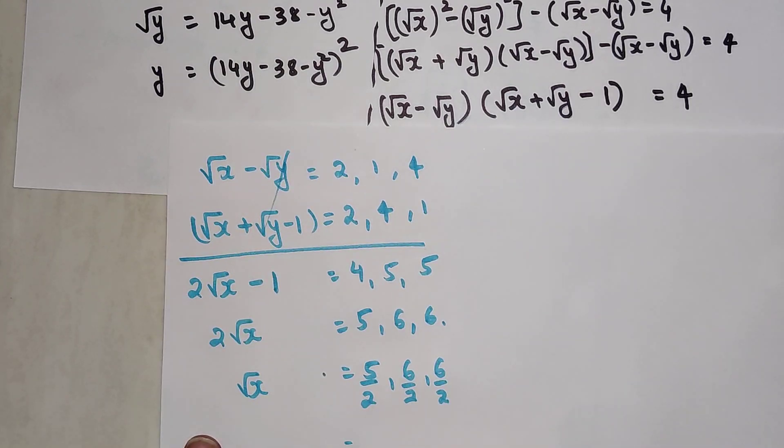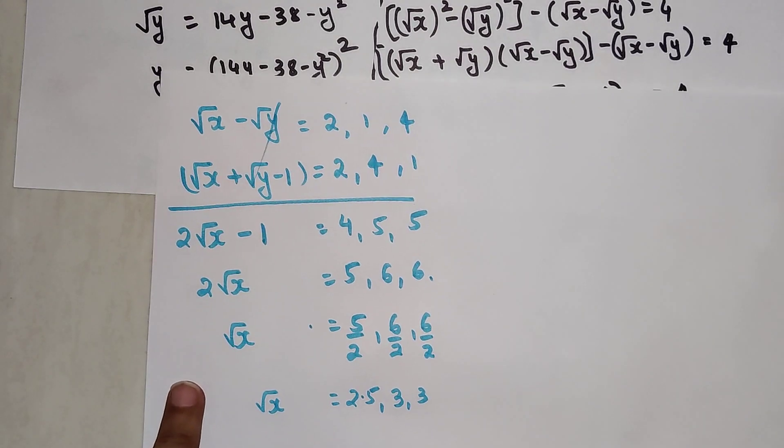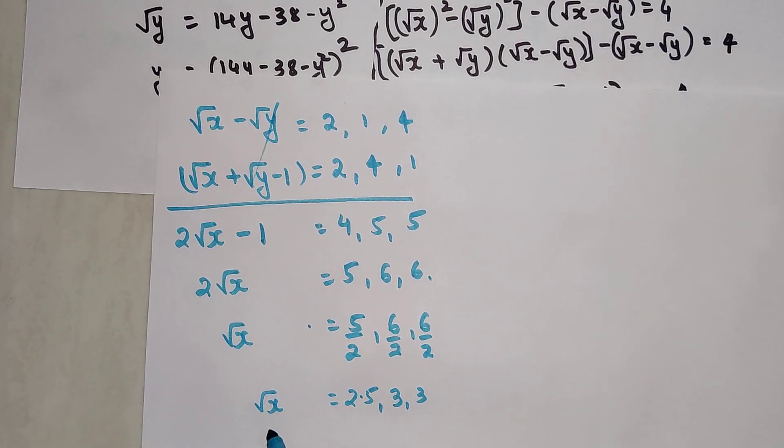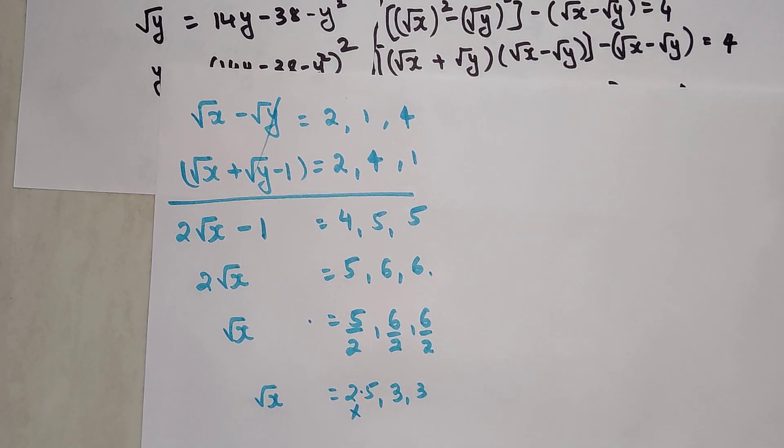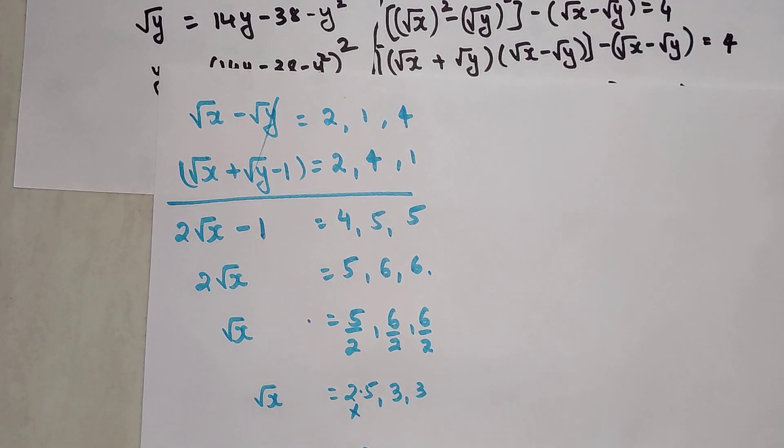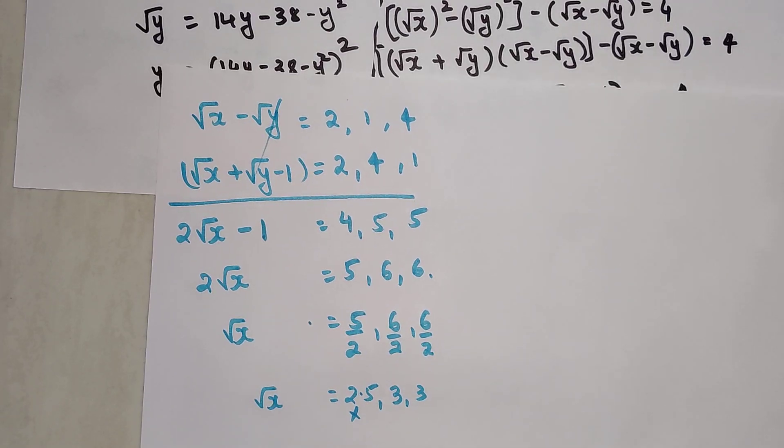We will get 2.5, this is 3, this is 3. This equals root x. We know x and y are just integers, so we have to disregard this value of 2.5. The value of x, squaring both sides, is 9.